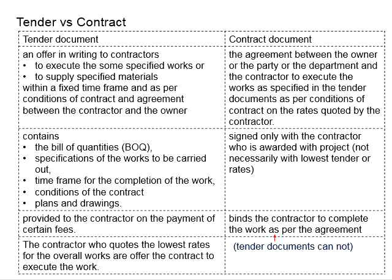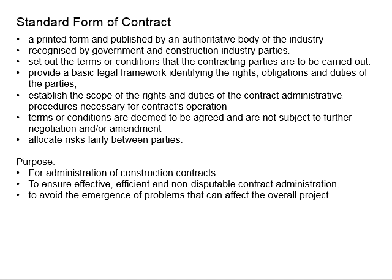Within the tender document, the conditions of contracts are also clearly outlined. This will become the basis that eventually going to be transformed into the agreement between the contractors and the employers. These tender documents are normally drafted on the basis of the standard form of contract, particularly the conditions of the contract part. This brings to the topic that we are going to discuss in this video, which is about the standard form of contract.